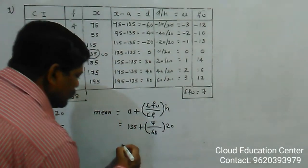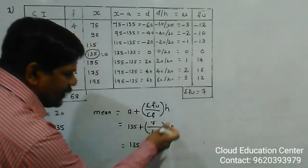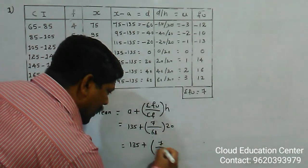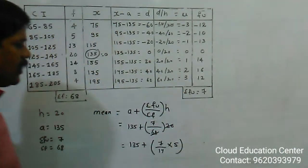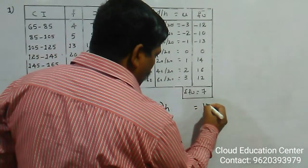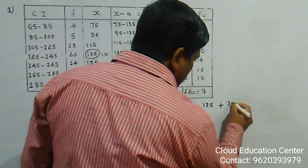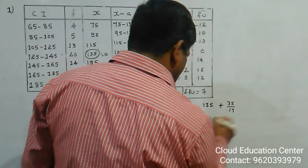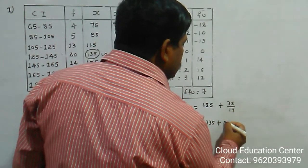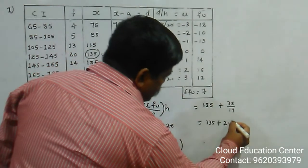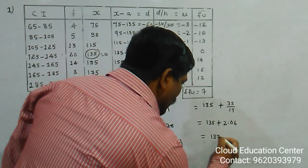Now substitute into the mean formula: Mean = A + (Σfu / Σf) × h. So Mean = 135 + (7/68) × 20. Simplifying: 7 × 20 = 140; 140/68 = 35/17 ≈ 2.06. Therefore Mean = 135 + 2.06 = 137.06.